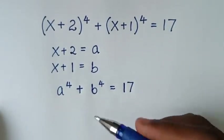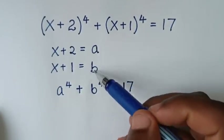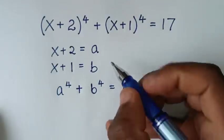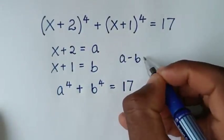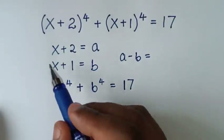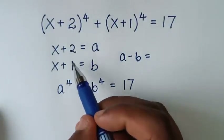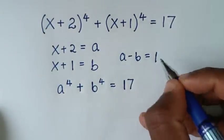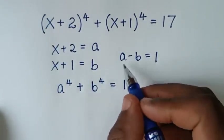Then in the next step, from a and b, the difference between a and b, which is a minus b: x minus x is 0, and 2 minus 1 is 1. So a minus b is equal to 1.